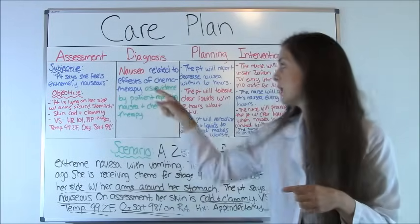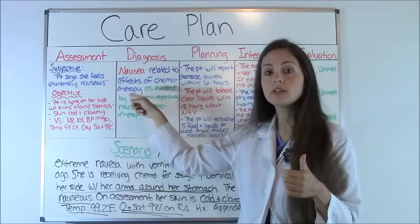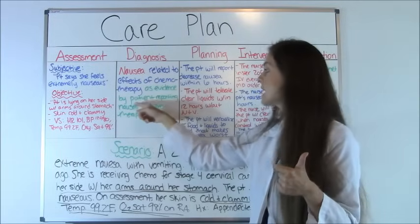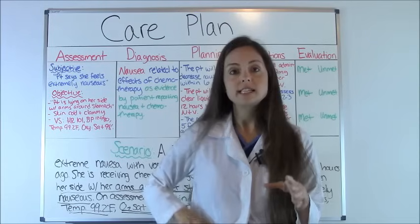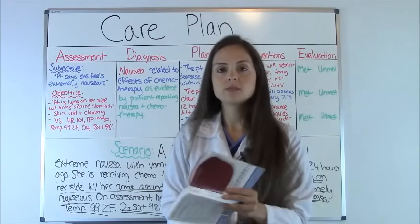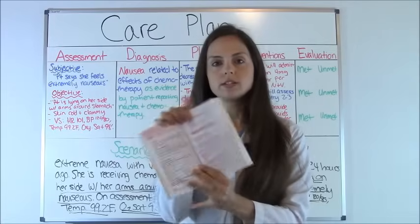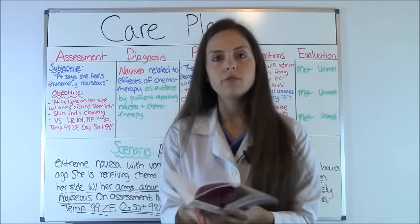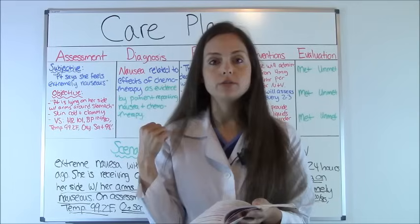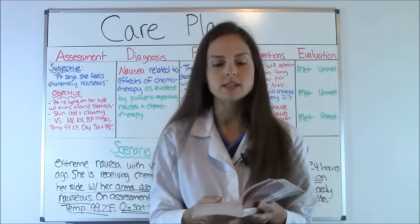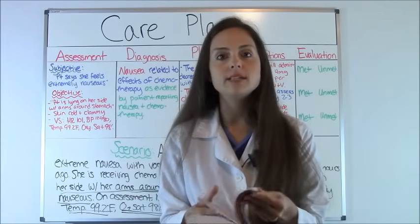The nursing diagnosis has three parts — hence why this is shown in different colors. You have the diagnosis, the related to part, and the as evidenced by part. The first two parts come from your nursing diagnosis book. Today I'm using a nursing diagnosis book by Carpinito. Also, this book has an appendix where if a patient comes in with cancer or congestive heart failure, you can go to that specific section and it will actually give you diagnoses you can use. So I really recommend you get a good nursing diagnosis book.